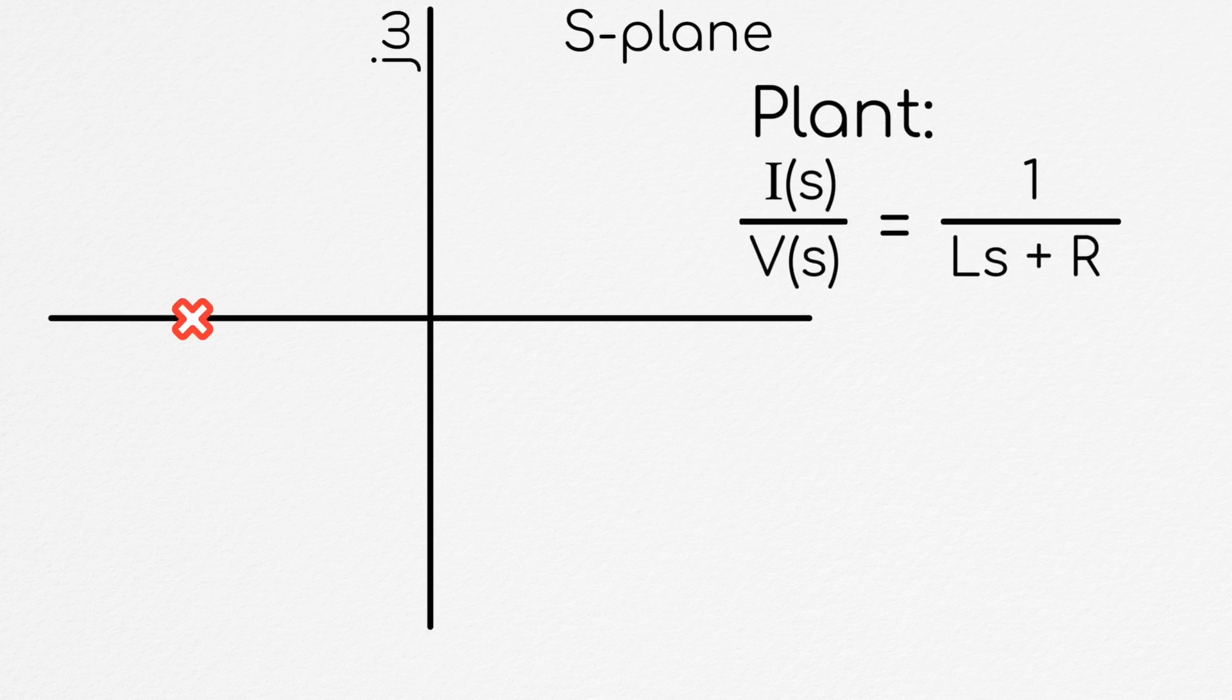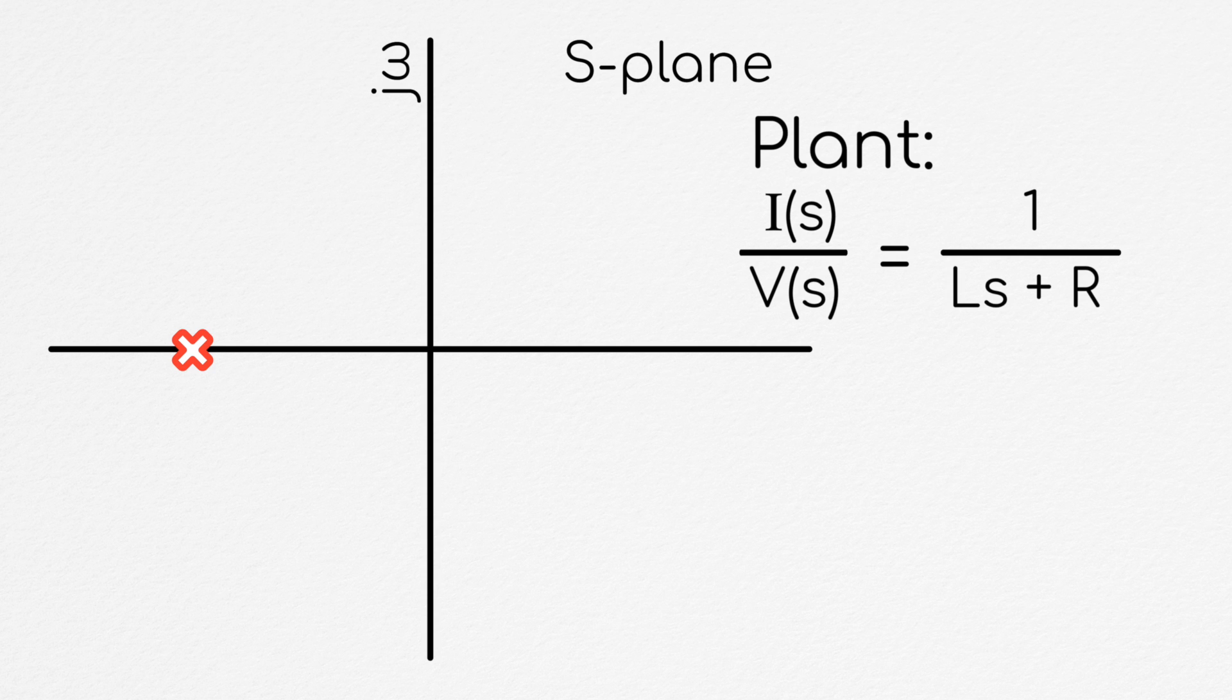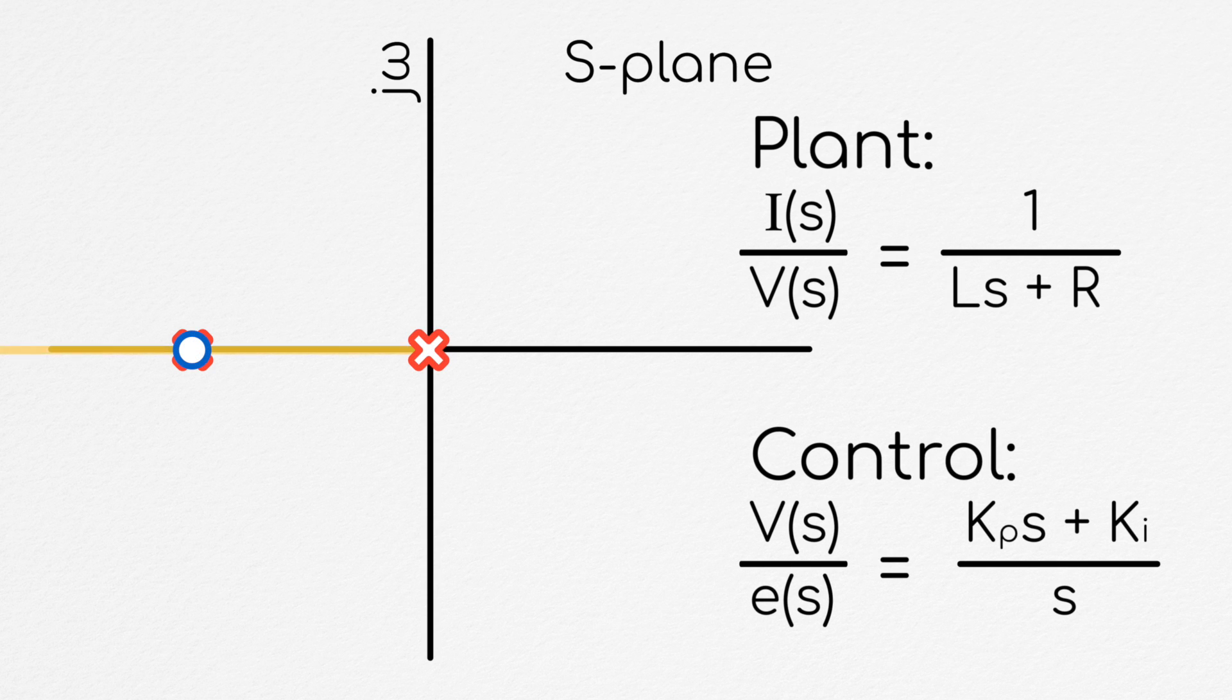So typically, the current control of a motor is done via a PI controller, where the zero is placed on top of the pole at negative R over L, effectively canceling its dynamics out. Obviously, perfectly canceling this pole isn't possible, as the motor system changes with temperature. But placing the zero approximately on this pole generally works very well. This approach results in quick system responses with minimal dynamics.